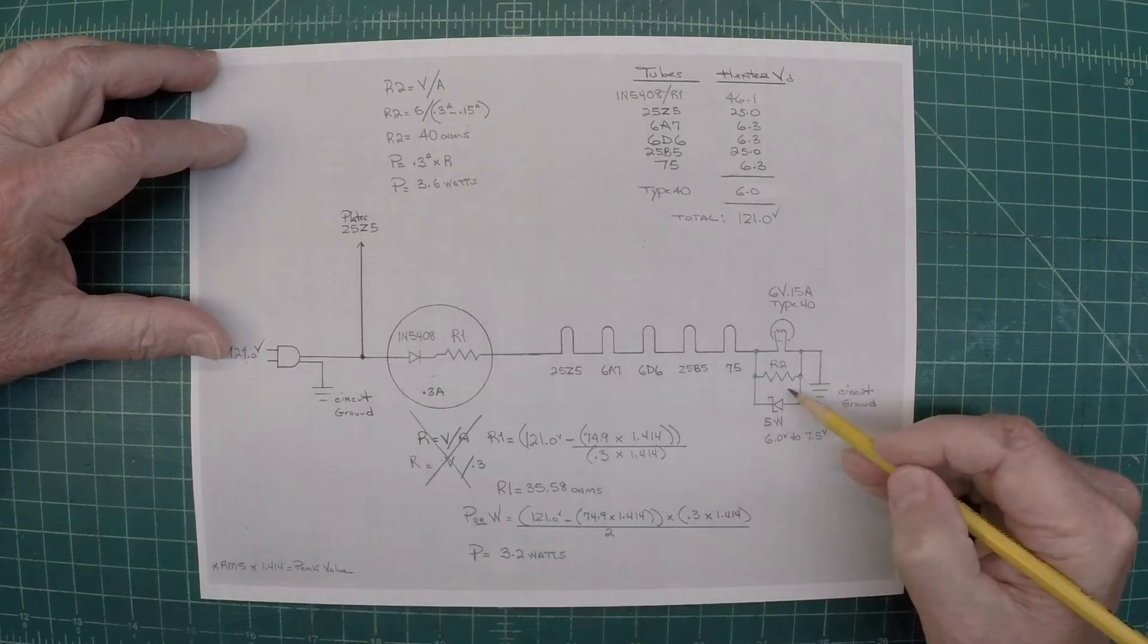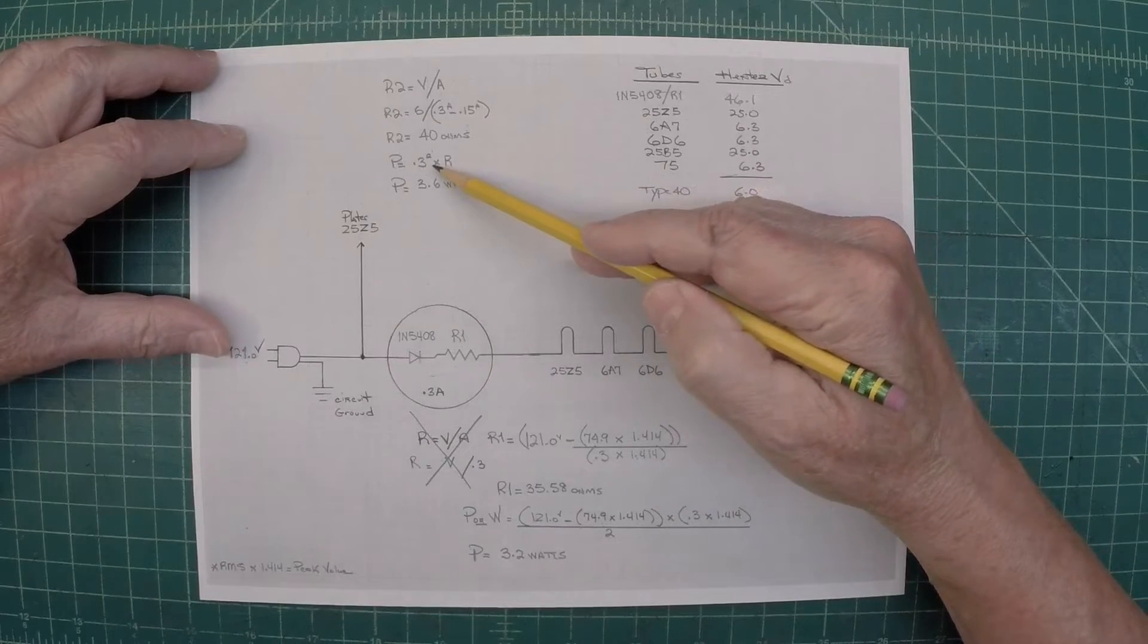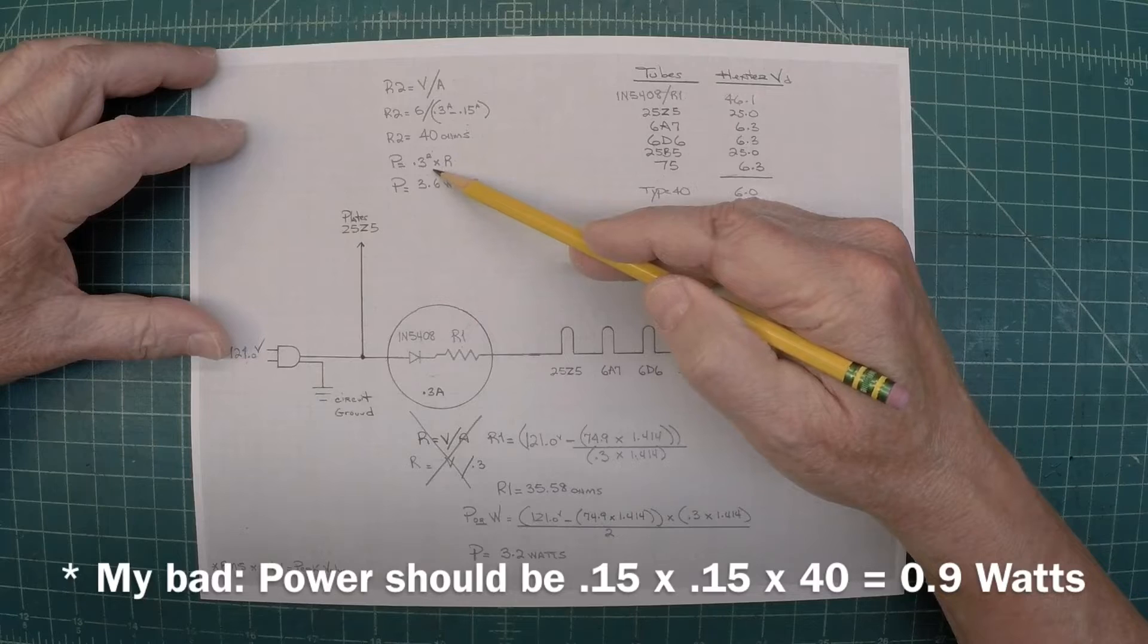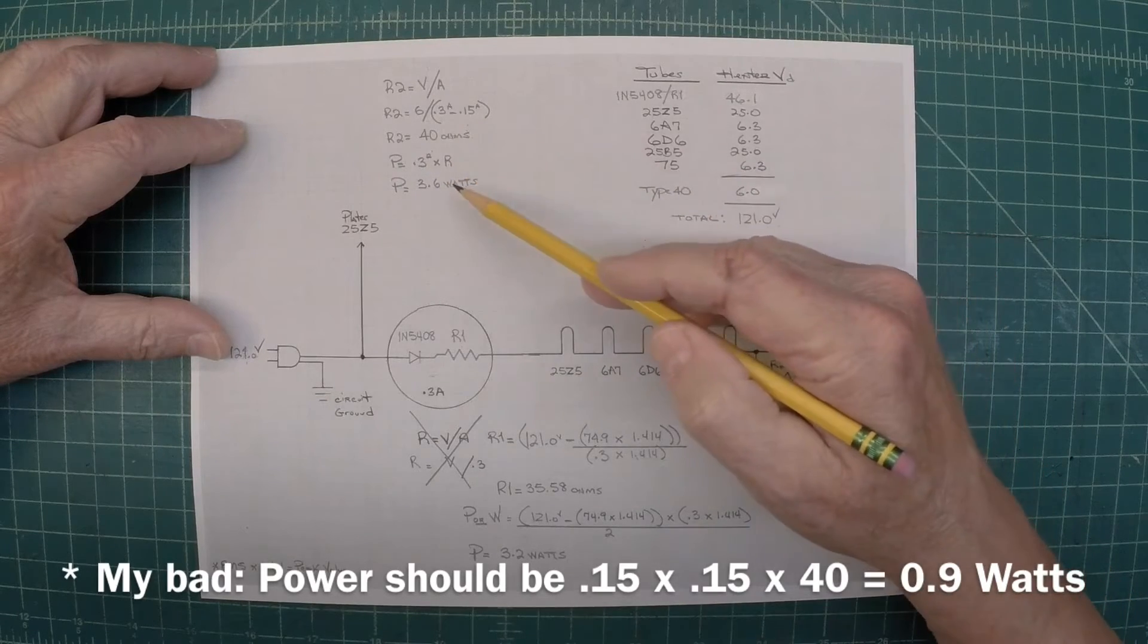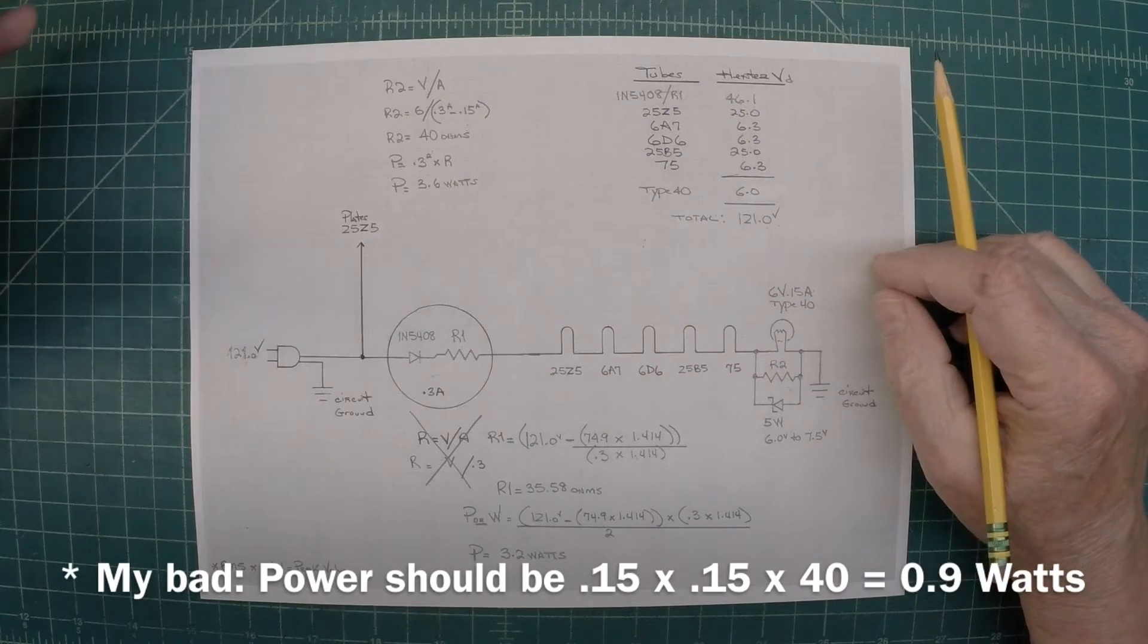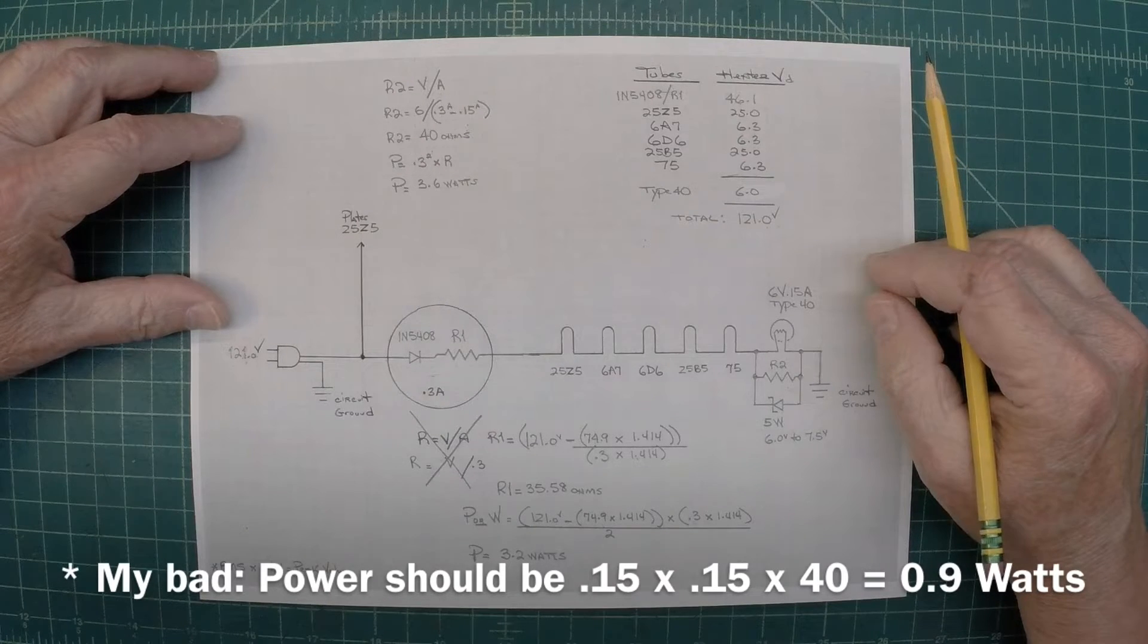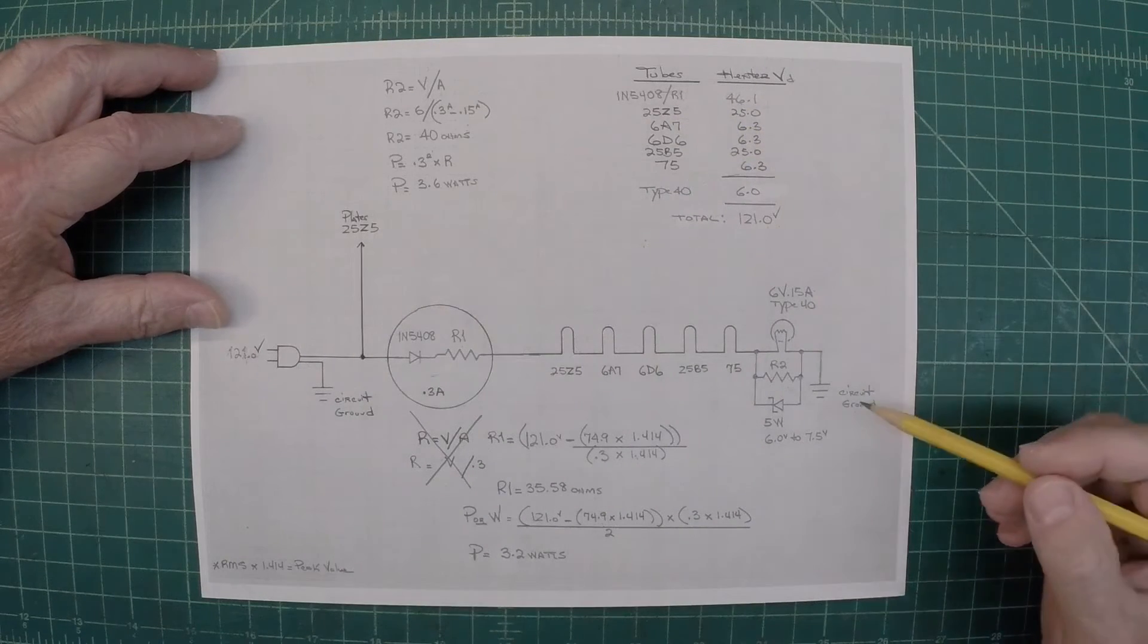And then to get the power rating, I can just take the 0.3. I can square that, which would be 0.3 times 0.3 times 40, comes out to 3.6 watts. In this case, for now, I have a little 5 watt resistor. That's what I've placed in there. And that's pretty much it.